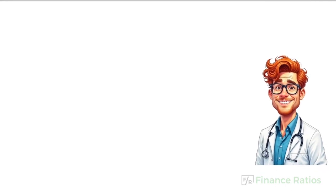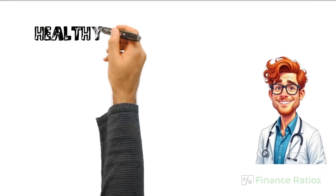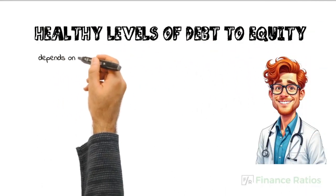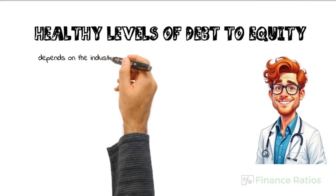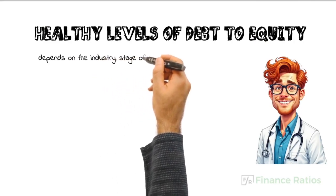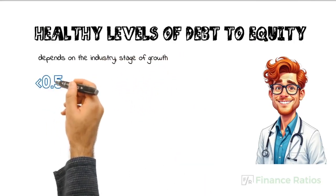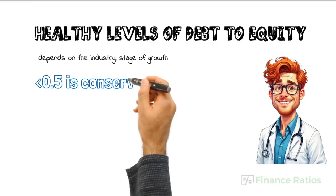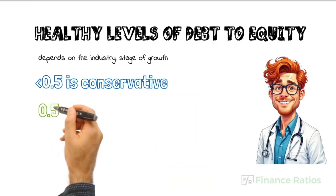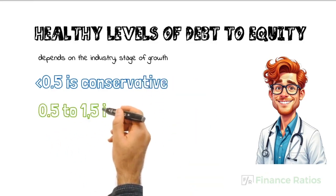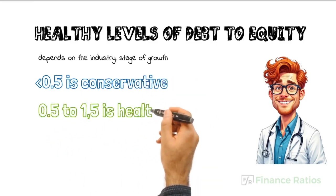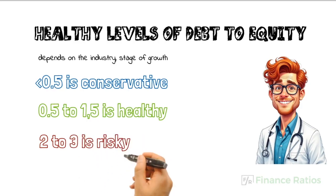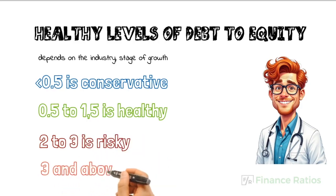Lastly, let's discuss what are considered healthy and unhealthy levels of the debt to equity ratio. While it depends on the industry and stage of growth, in general: a ratio below 0.5 is conservative, 0.5 to 1.5 is healthy for most industries, 2 to 3 is more risky, and above 3 is extreme.